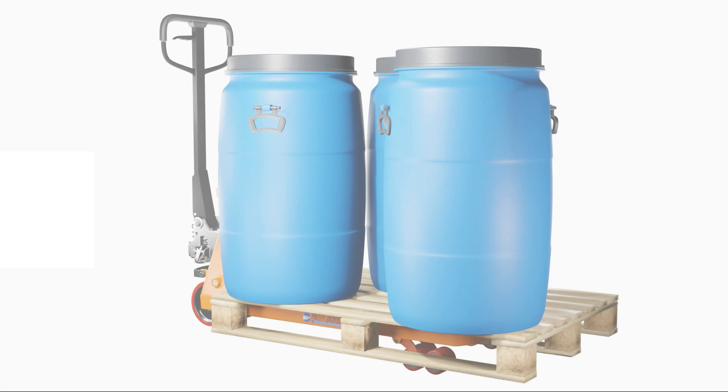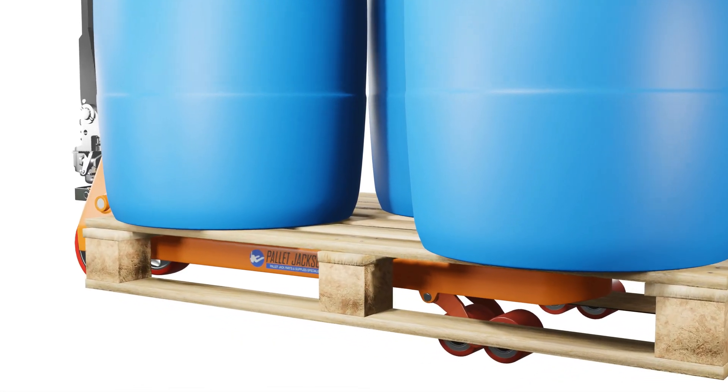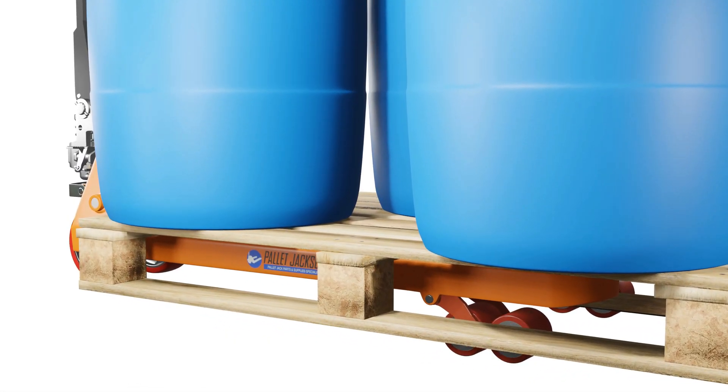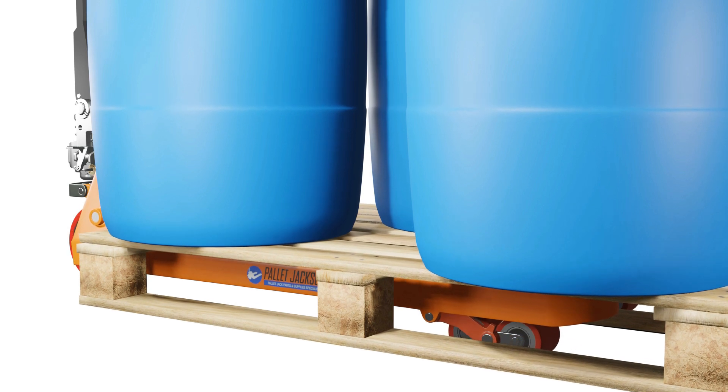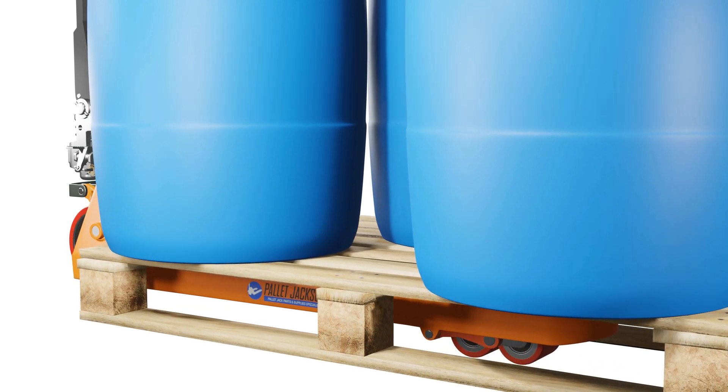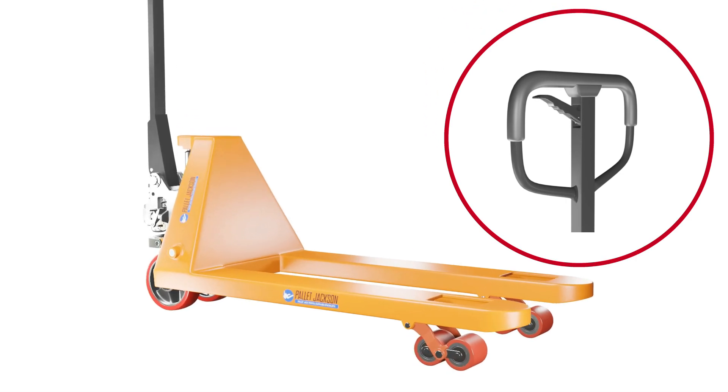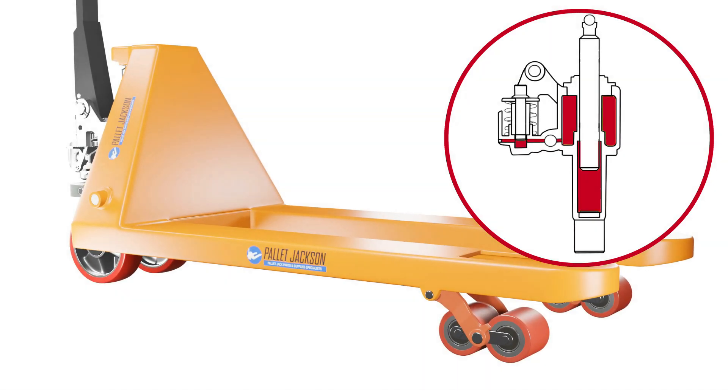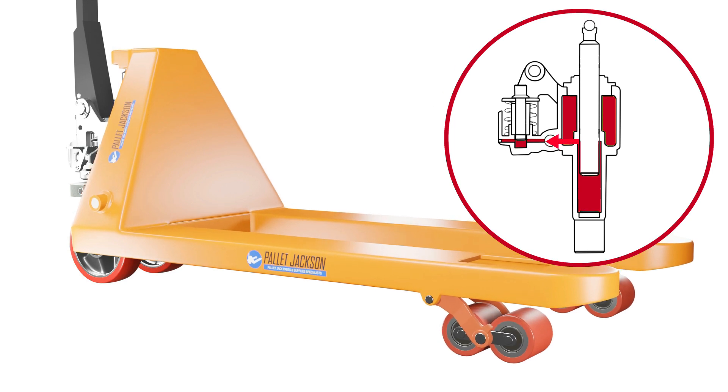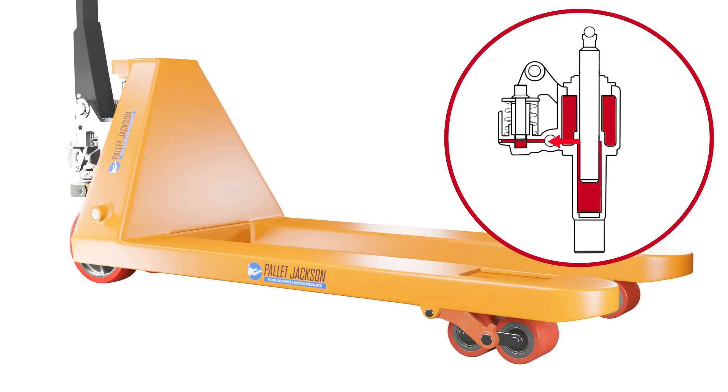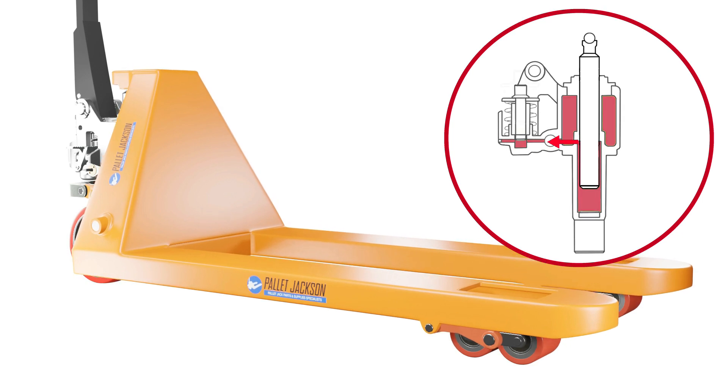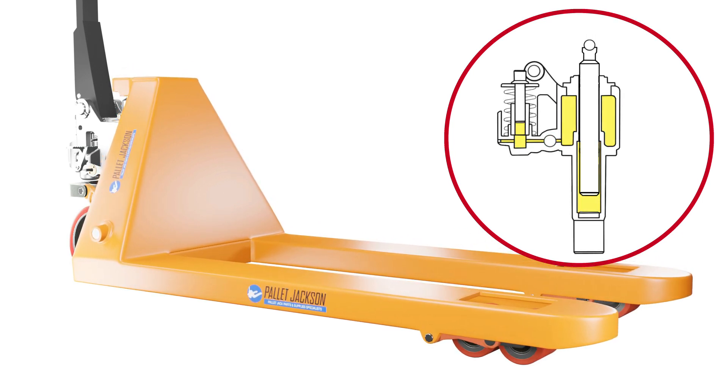Now, lowering the pallet jack is just as crucial as lifting. The pallet jack hydraulic system allows for precise and controlled lowering of the load. By releasing the handle slowly, the hydraulic fluid can flow back to the reservoir and the pressure inside the cylinder decreases gradually. It's essential to handle this process carefully to avoid sudden drops, which could damage the load or pose safety risks.